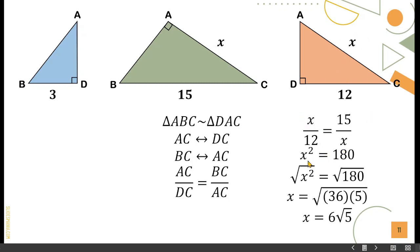We have X times X equals X squared, and 12 times 15 is 180. Taking the square root of both sides: square root of X squared is X. Since 180 is not a perfect square, find the factor: 36 and 5. Square root of 36 is 6, and square root of 5 remains inside the radical. Therefore, X is equal to 6√5.